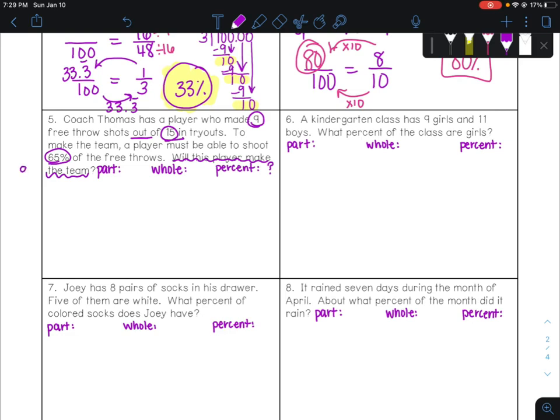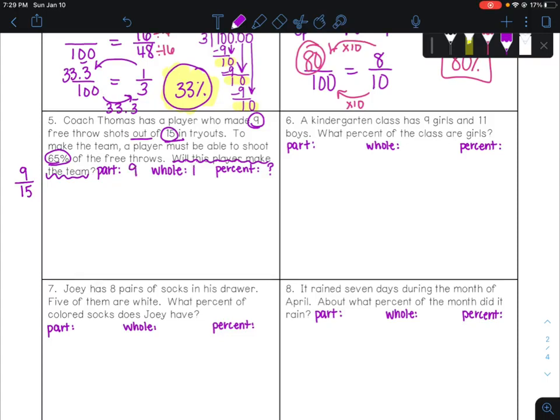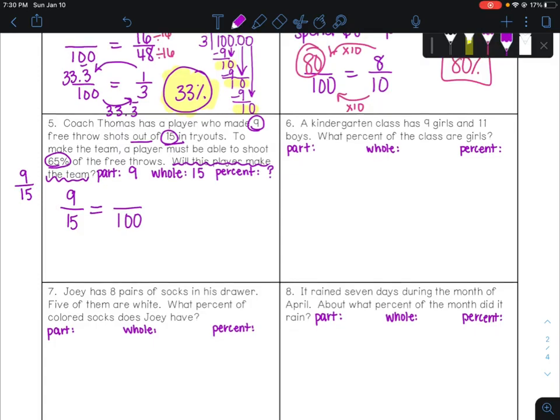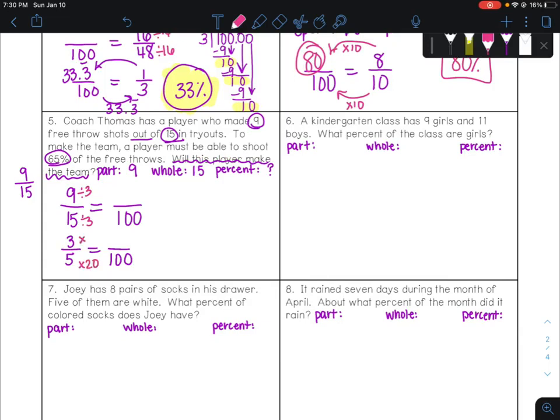We do know our part and our whole because we have 9 out of 15. 9 out of 15 would mean that the top number is 9 and the bottom number is 15. So the part is 9, the whole is 15. So 9 out of 15 equals something out of 100. We don't know the percent. And looking at this one, I can't make a 15 into a 100, but I can simplify that first fraction. So I'm going to try simplifying by threes. If we do that, we'll get 3 over 5 equals something over 100. And we know that we can make a 5 into a 100 by using the number 20. And then we do 3 times 20. That's going to give us 60.